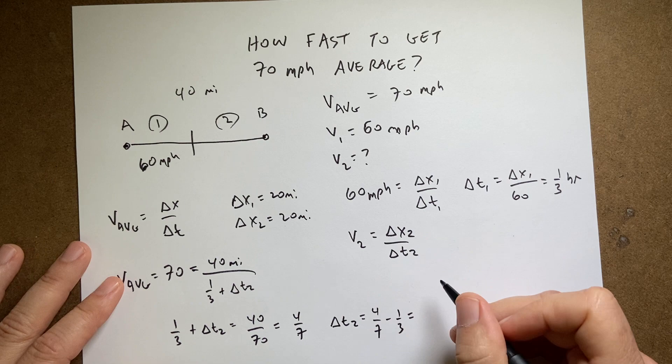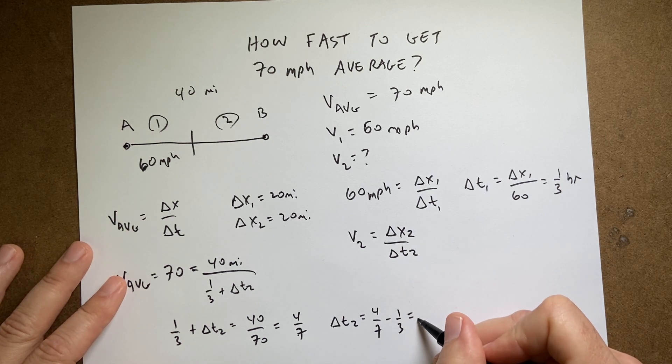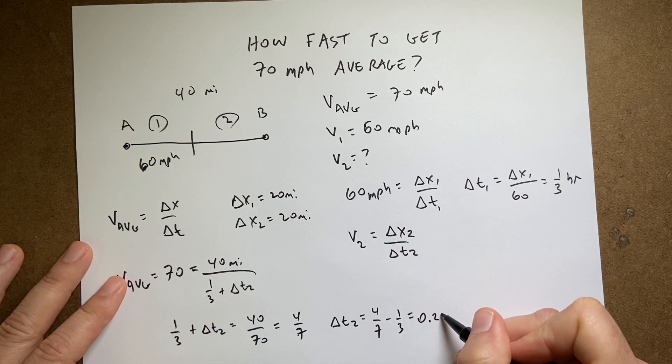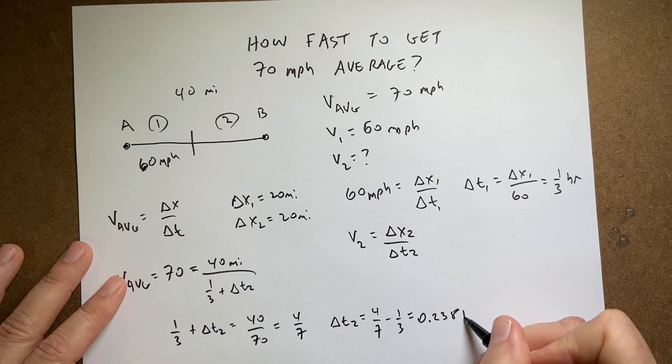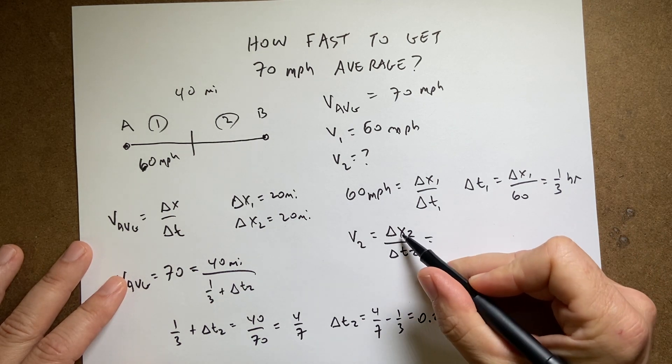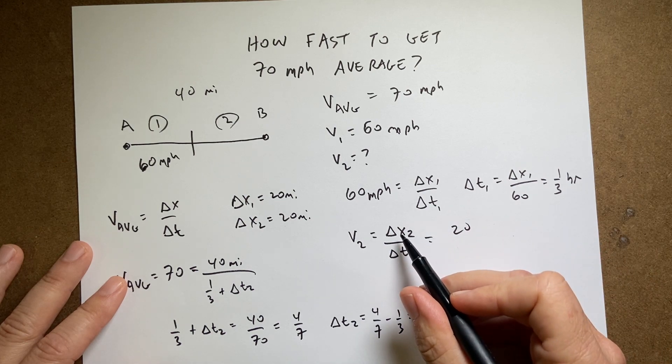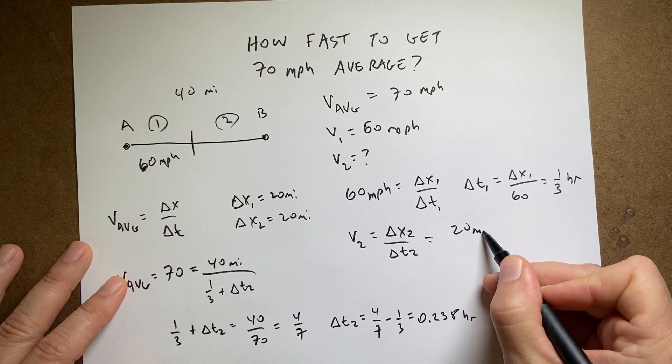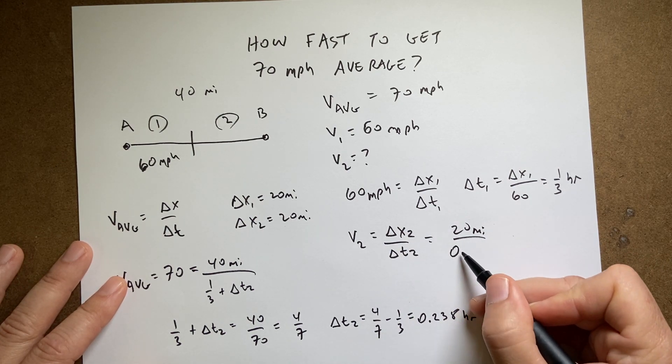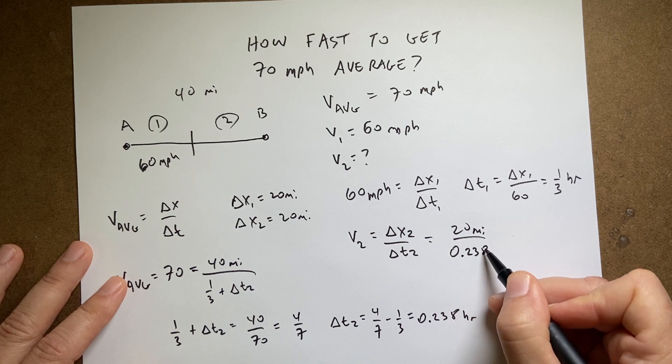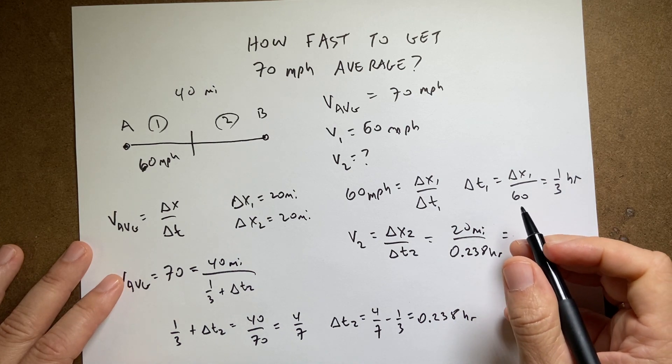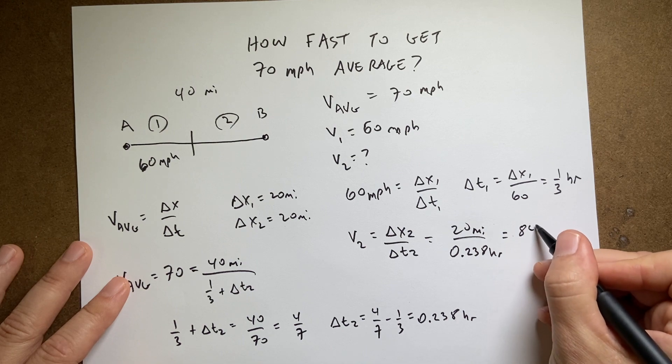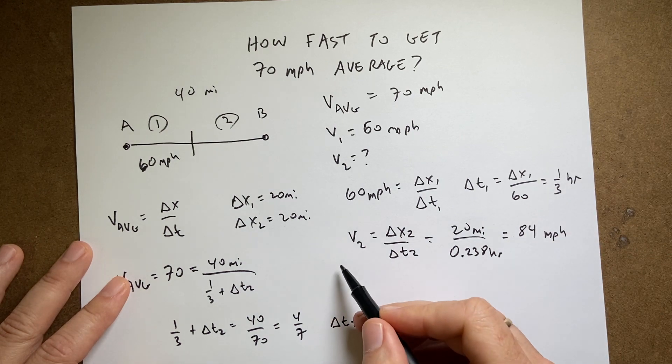And if you put that in your calculator you get 0.238 hours. So now up here I can say 20 miles, right, because we were just talking about the last part, 20 miles divided by 0.238 hours, and I get 84 miles per hour.